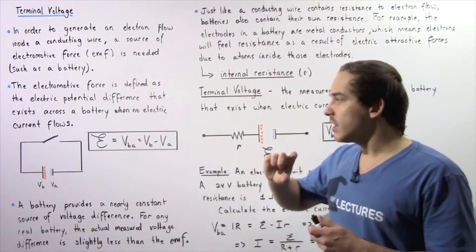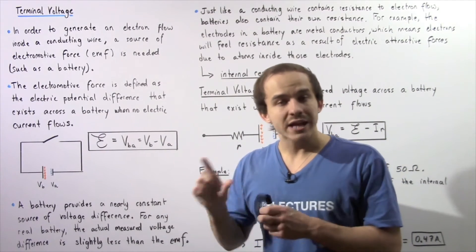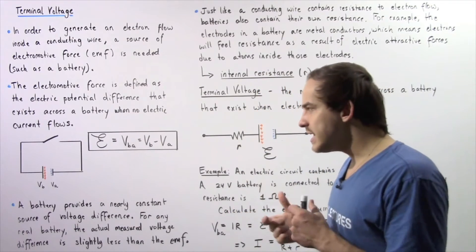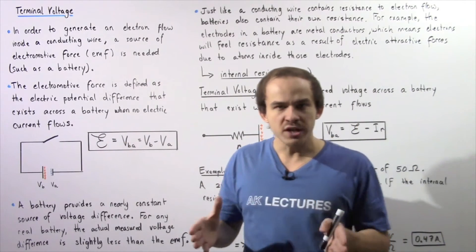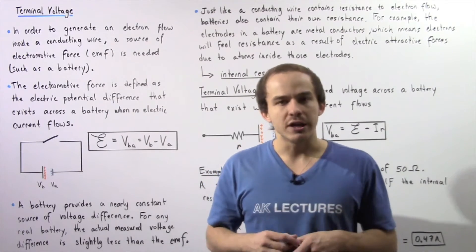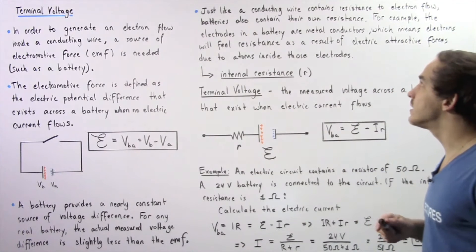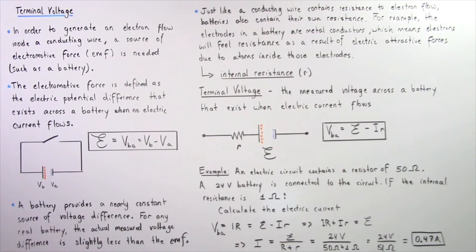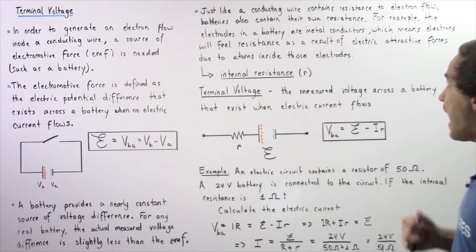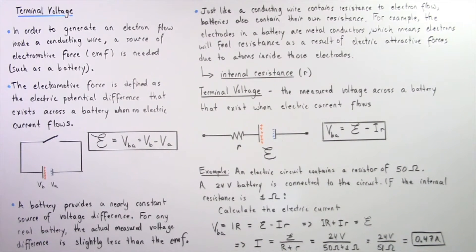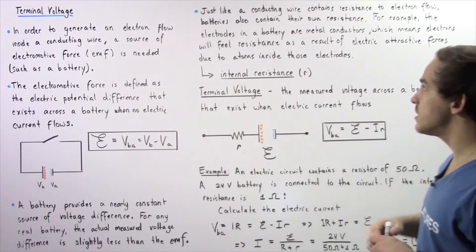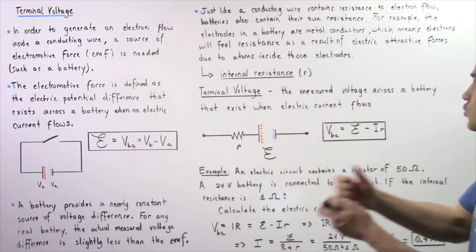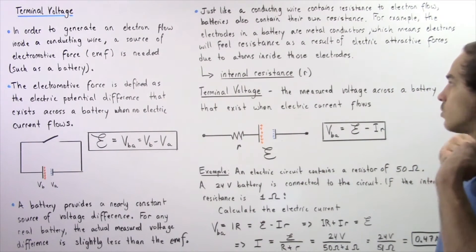If we actually measure the electromotive force of any real battery when electrons are allowed to flow, we'll see that the voltage actually drops below the electromotive force. That's because any real battery has internal resistance to electron flow. Just like a conducting wire contains resistance to electron flow, batteries also contain their own resistance. For example, the electrodes in the battery are essentially metal conductors, which means electrons will feel resistance as a result of the electric attractive forces between the atoms of the electrode and the electrons flowing through those electrodes.